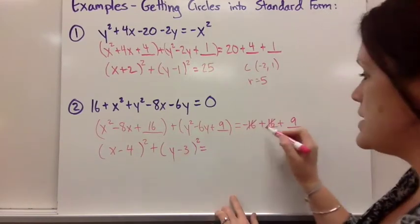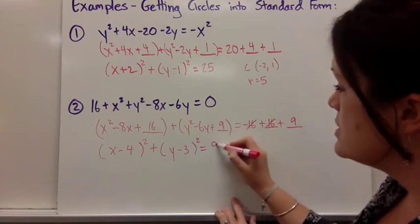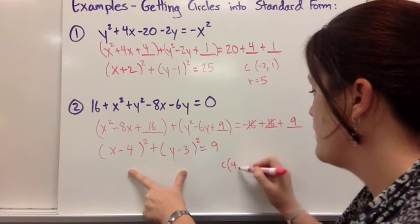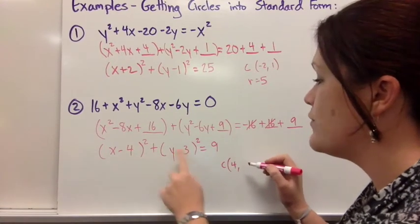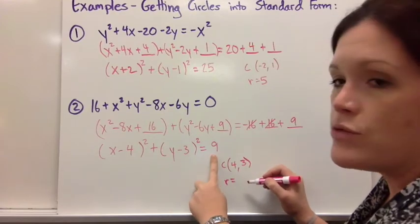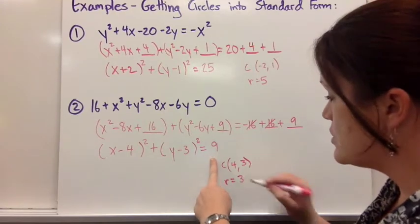-16 plus 16 cancels out. So this side just adds up to 9. And now I can easily pick out the center is (4, 3). I was getting ahead of myself. And the radius would be the square root of 9 which is 3.